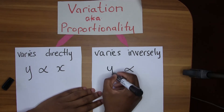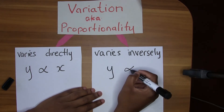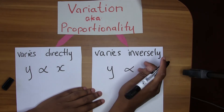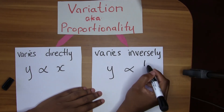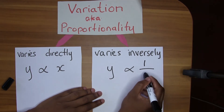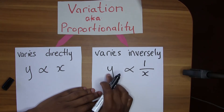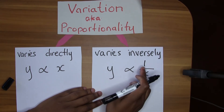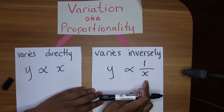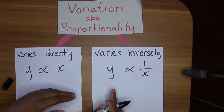Since it's multiplicative, if we want to express inverse variation we'll use the multiplicative inverse. So y is proportional to the inverse of x, meaning as y goes up, x must go down to maintain the relationship.